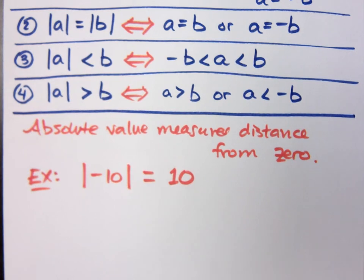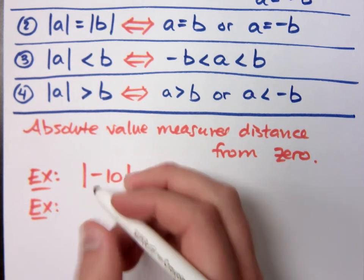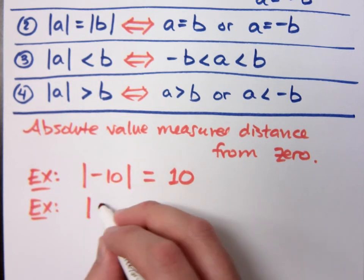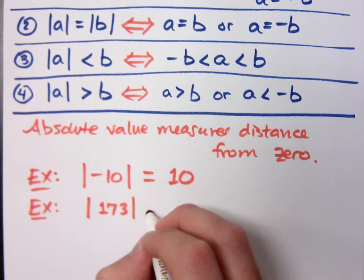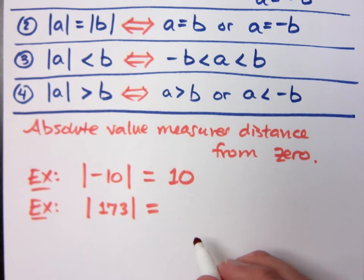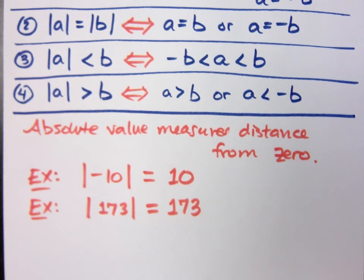When we talk about distance, we talk about positive distance for the most part, right? There are some applications where we do talk about negative distance. That's not what we're doing here. Let's say the absolute value of 173. How far away from zero is 173? It's 173 units, right?